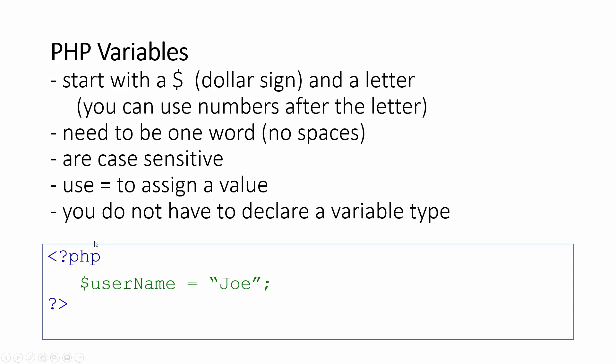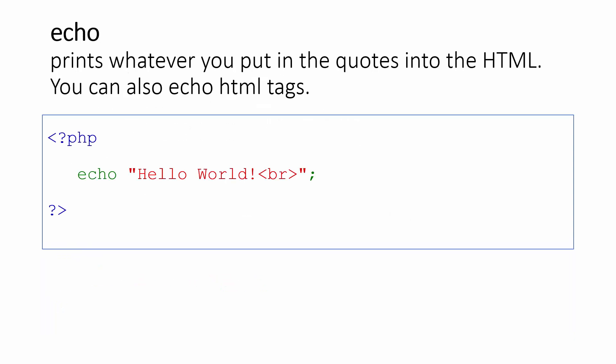What's cool about PHP is you don't have to declare a variable type. In some languages you have to say up front if something's a string or an integer. With PHP, you can just go ahead on the fly and say, hey, I've got a variable — I'm going to call it username and put Joe in it. A common statement is using the echo command, and that prints whatever you put into the quotes into the HTML.